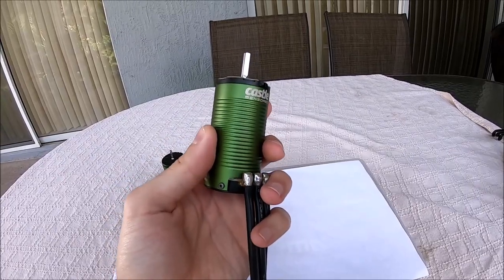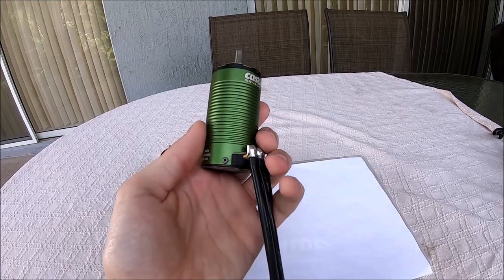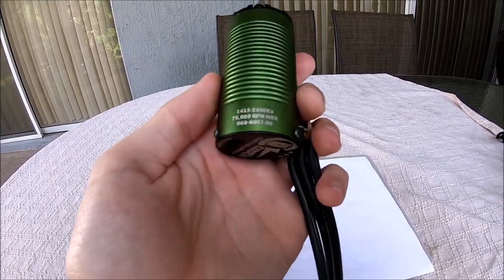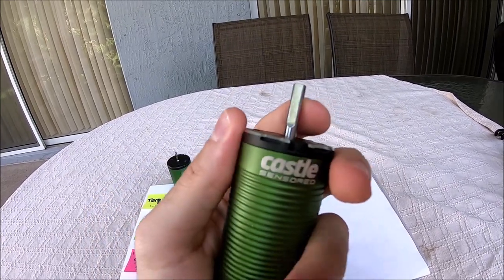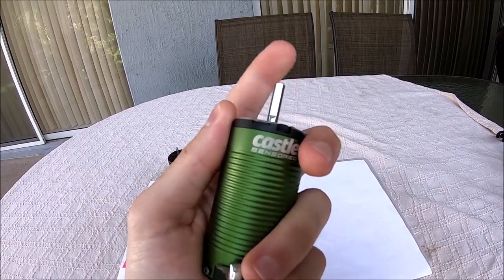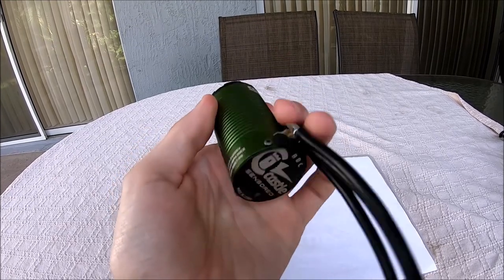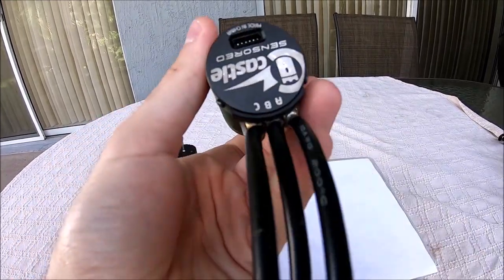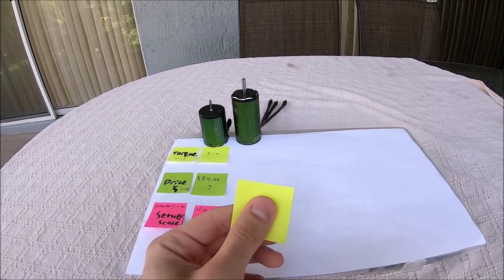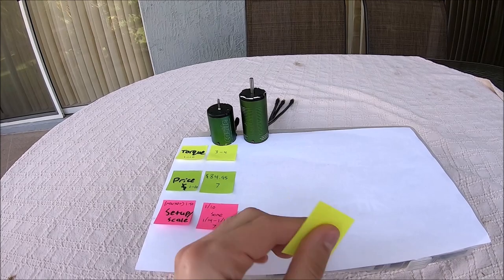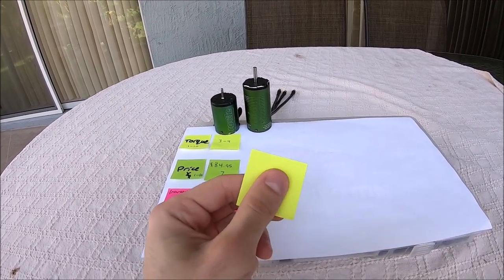This is the 1415, so pretty much this is the biggest 14 series motor that you can buy. It is 2400 KV and this is the optional 5mm shaft, which is awesome. It's super durable and robust and this also comes with a sensor port. Of course, running it sensored is going to make everything a lot better.